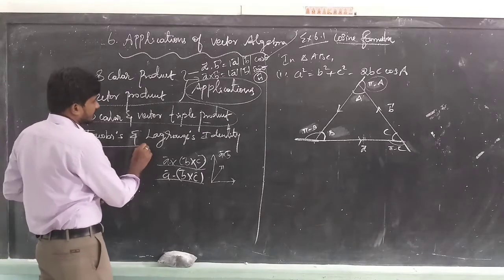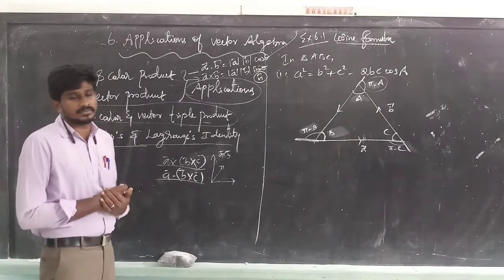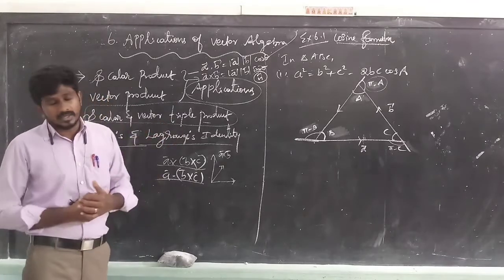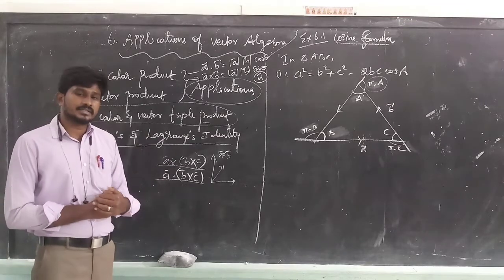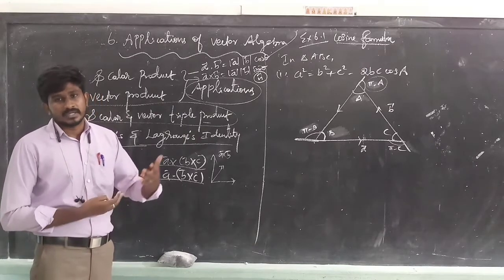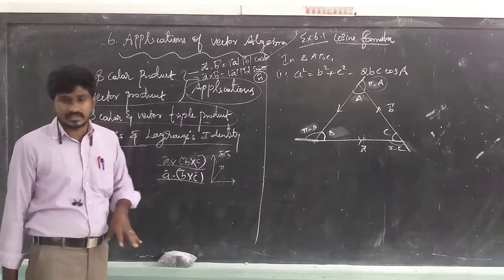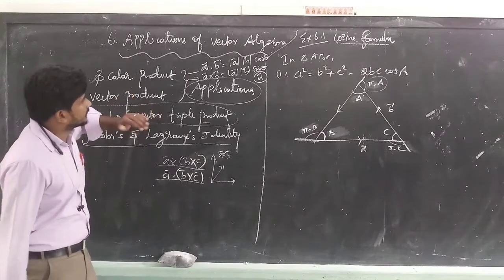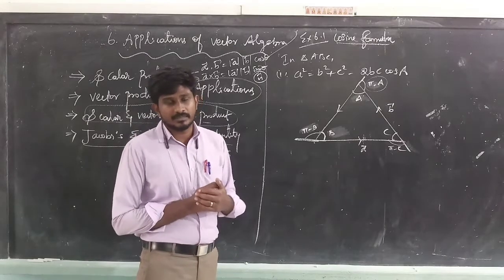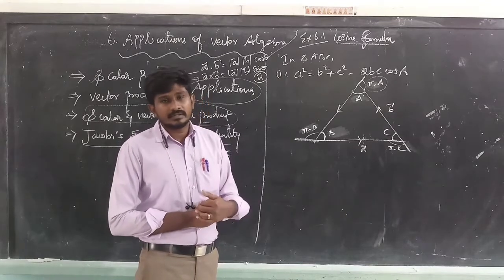The second thing is Jacobi and Lagrange identity. Jacobi and Lagrange identity involve 4 products — vector 4 products. There are some application problems: angles, points, planes, images, etc. It's a very important and easy lesson. The first step is the application, and in this application there is a geometric interpretation of the scalar product. The proof is very important and very easy to see.